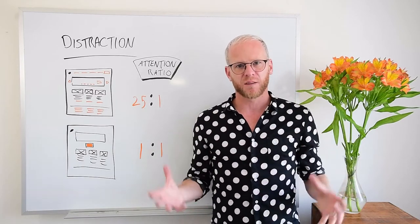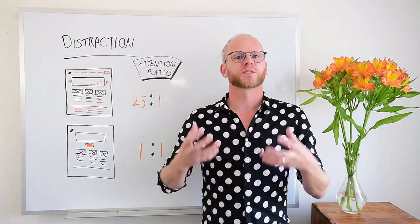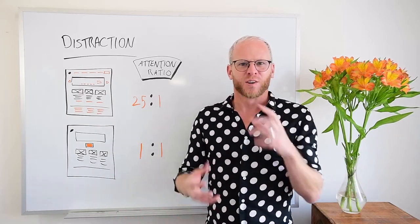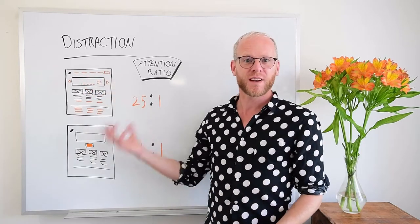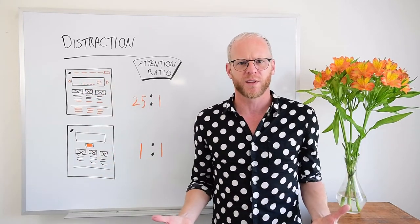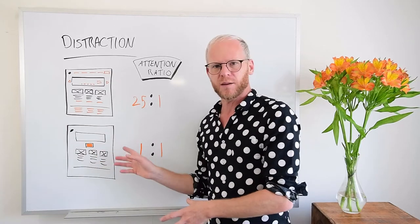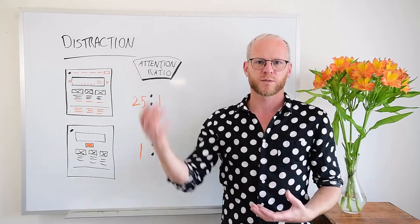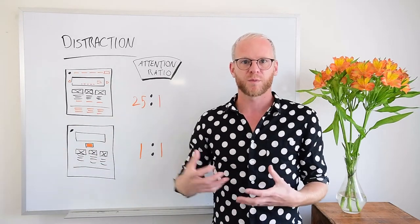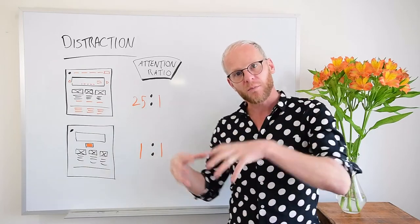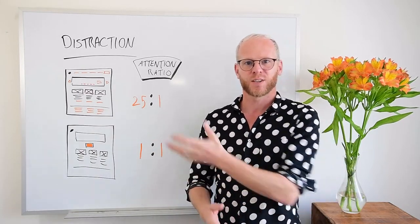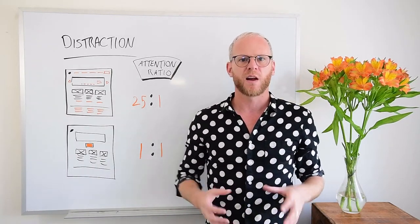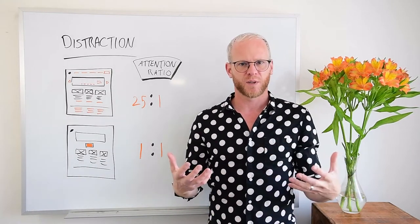Attention ratio matters. Distraction is the enemy of conversion — this is why landing pages are so impactful and powerful for marketing campaigns. Because you can't just go to your web dev team and say, hey, can you remove the navigation and all the links from the homepage? Of course you can't do that. But if you create a landing page just for that campaign, you can start by default without those distracting links. Now let's jump into the Unbounce landing page builder and I'll show you exactly how to use the principle of distraction and attention ratio to simplify your landing page, remove distractions, and ultimately increase conversions.